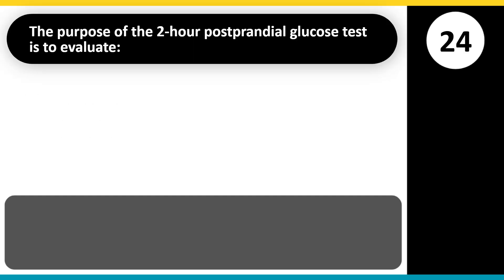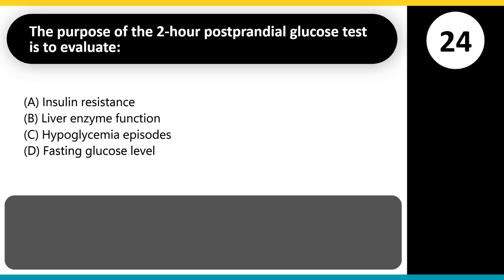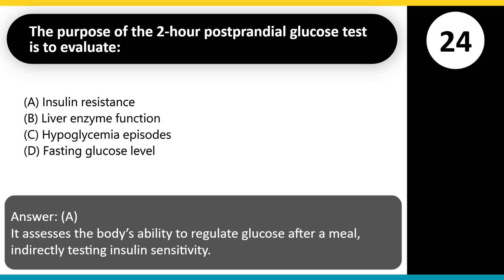The purpose of the 2-hour postprandial glucose test is to evaluate: A. Insulin resistance. B. Liver enzyme function. C. Hypoglycemia episodes. D. Fasting glucose level. Answer: A. It assesses the body's ability to regulate glucose after a meal, indirectly testing insulin sensitivity.